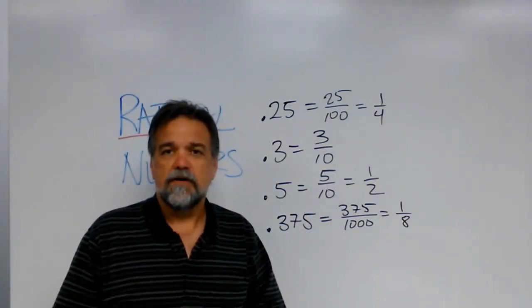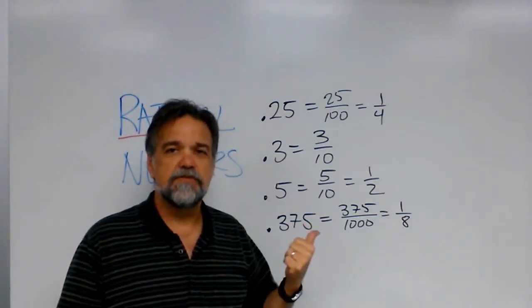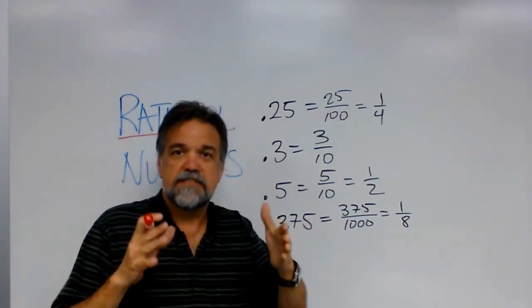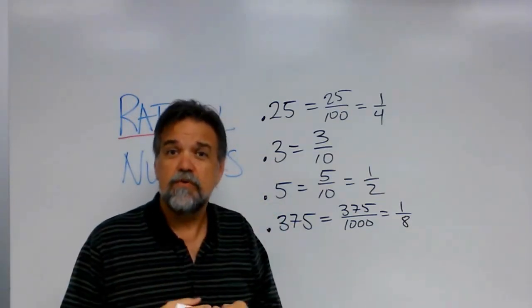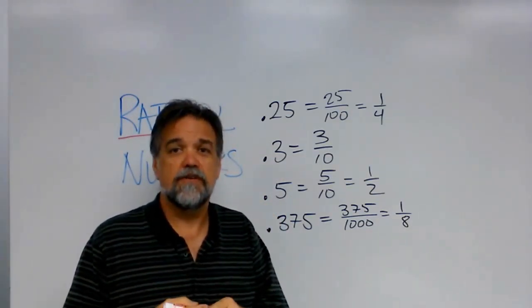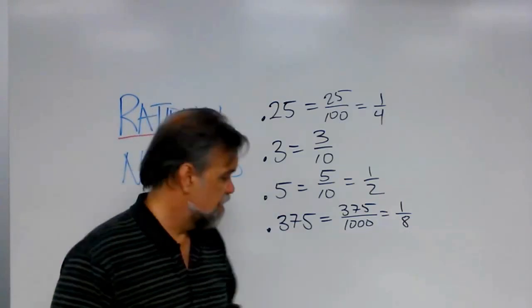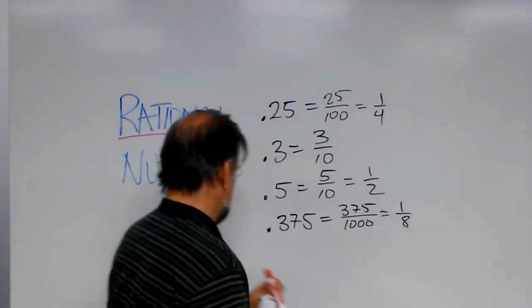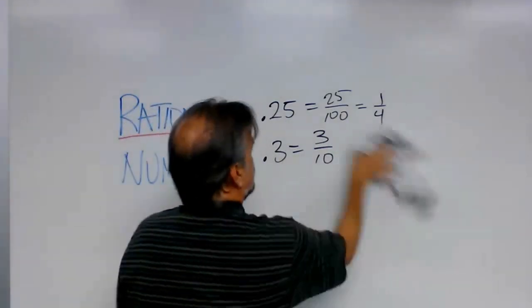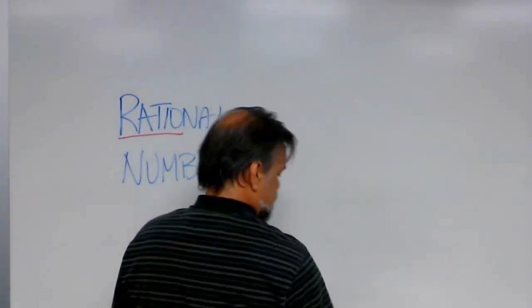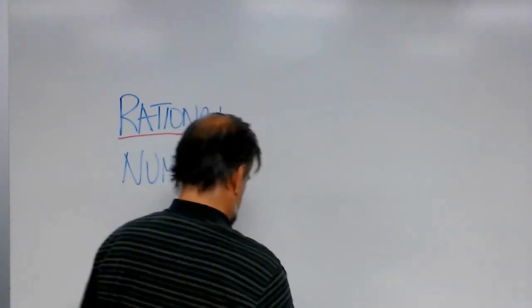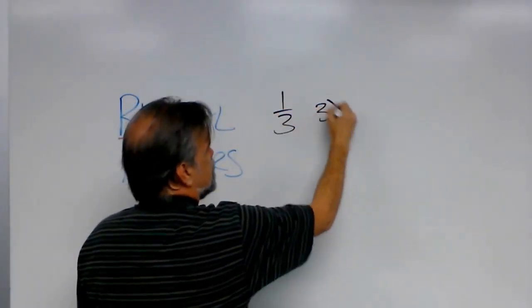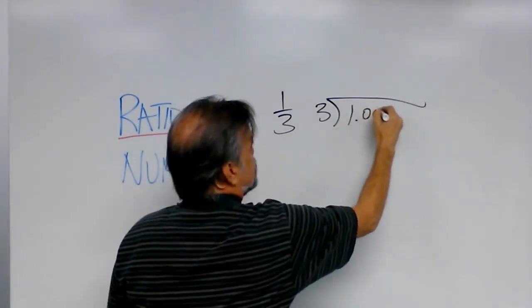Now, these are all easy because these are all terminating decimals, meaning you write out the decimal and it stops, but as you know, not all decimals terminate. There are some repeating decimals. For example, one-third. If you were to take one-third and divide that, one-third, if I divide three into 1.0000, this goes in three times, I get three times, and that's three times,